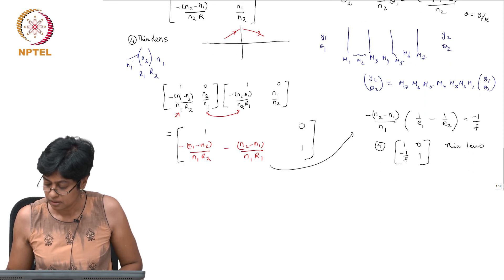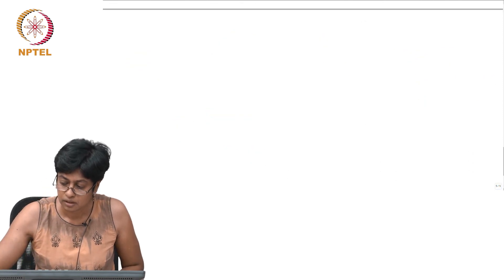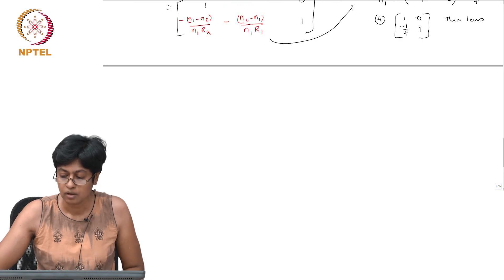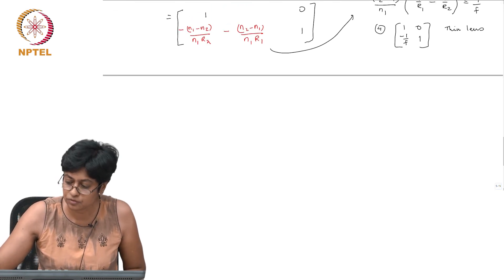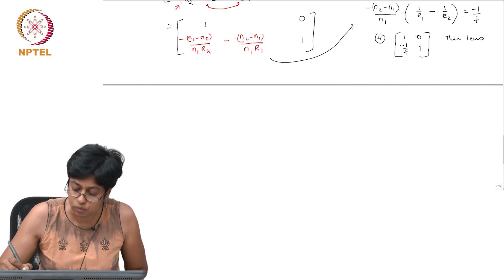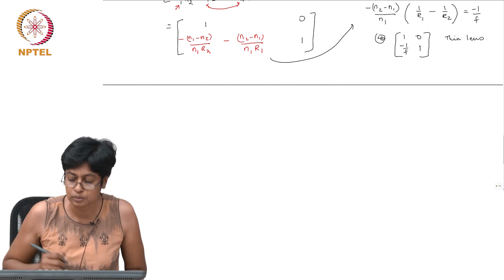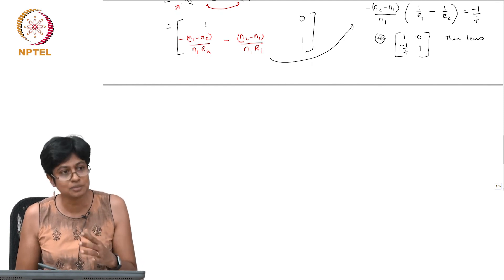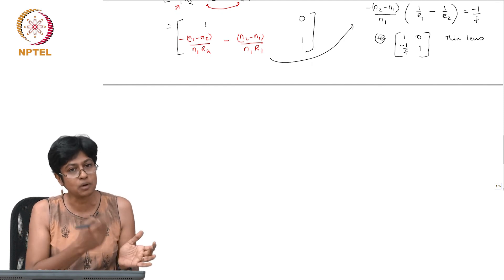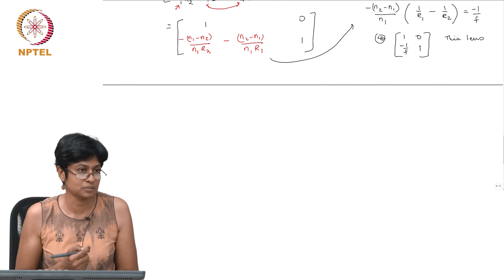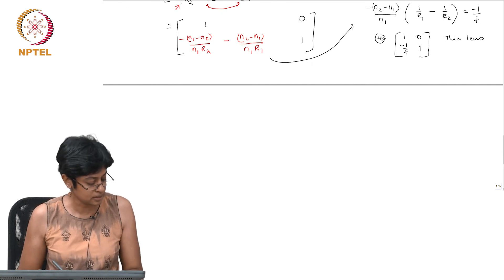We have now looked at four different ray transfer matrices — free space, refraction at a planar surface, refraction at a spherical surface, and the thin lens — the last one written both in terms of n₁, n₂, R₁, R₂ and equivalently in terms of the focal length f.